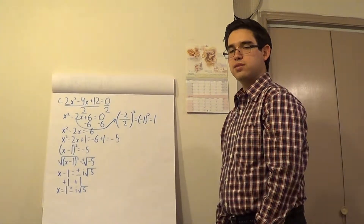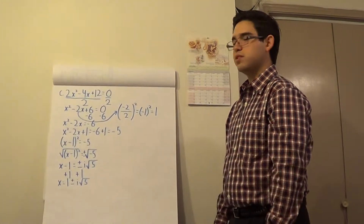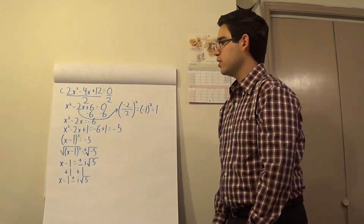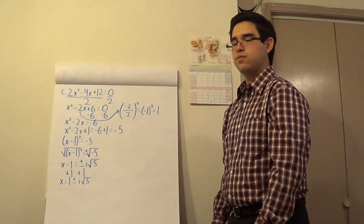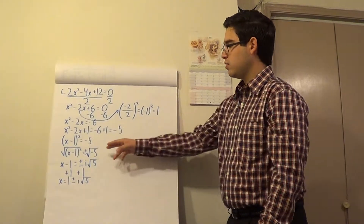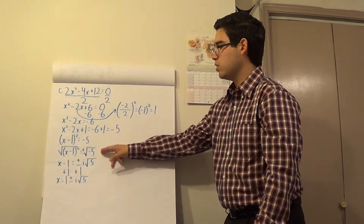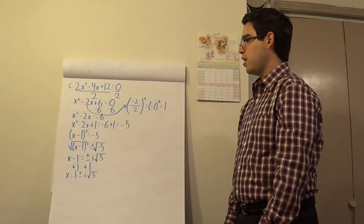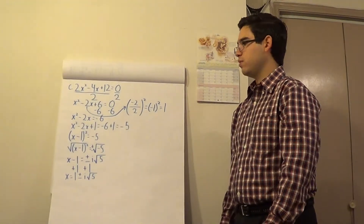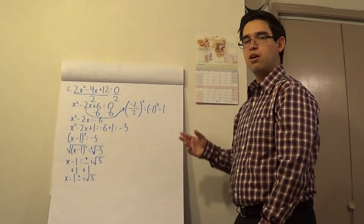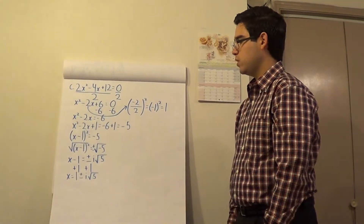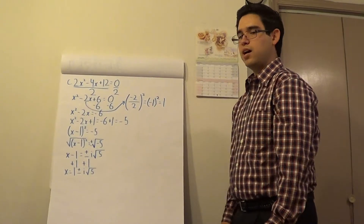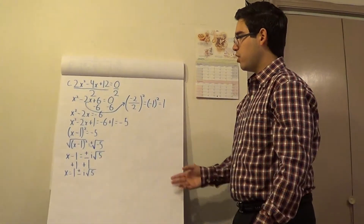Now to solve for x, find the square root of both sides. So you'll have the square root of x minus 1 squared is equal to plus or minus the square root of negative 5. This is equivalent to x minus 1 is equal to plus or minus i times the square root of 5. To solve for x, add 1 to both sides: x is equal to 1 plus or minus i times the square root of 5. And there are your solutions.